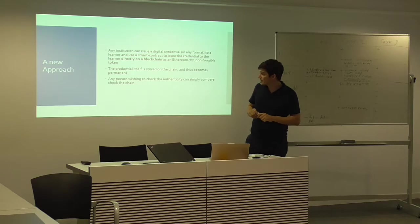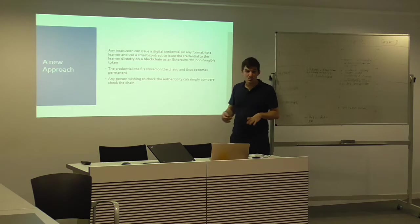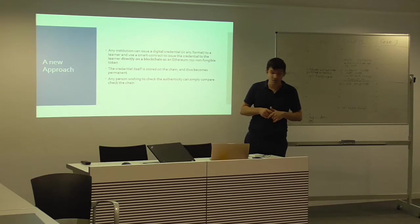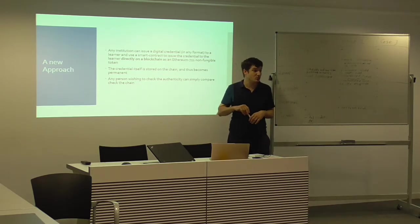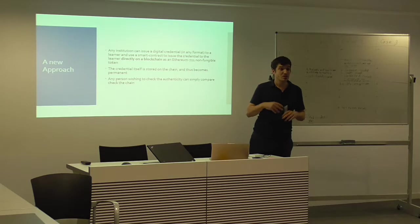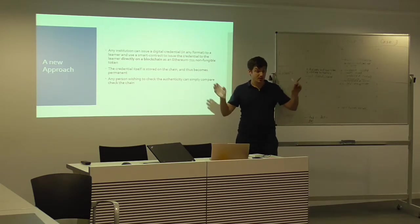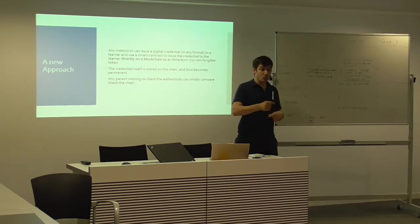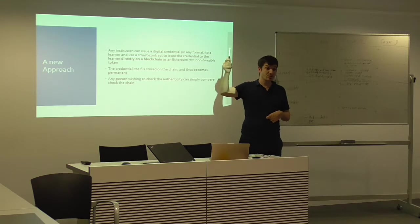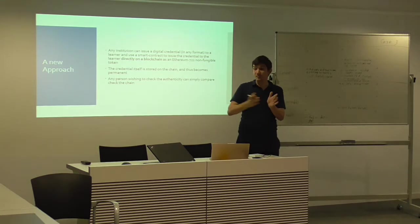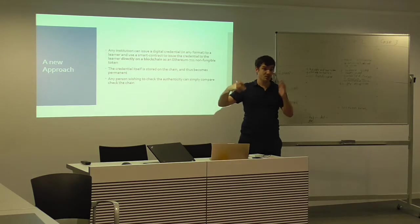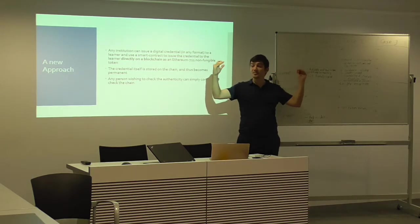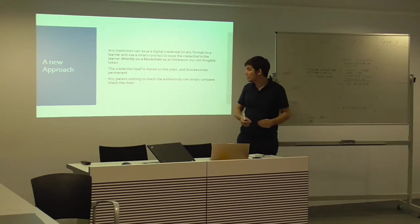What we're experimenting with is a slightly different and more radical approach. We're saying, why just store the hash on a blockchain? Let's store the entire credential on the blockchain using something called an ethereum smart contract. We want to store the basic claim: The University of Malta awarded Anthony Camilleri one degree in law on this date. The rest of the information we store off-chain because blockchains have size limitations, but we want to store that statement—the essential statement of the award—directly on the chain.